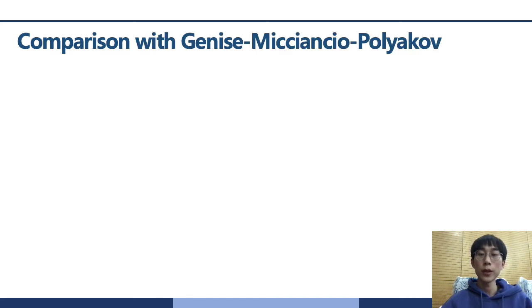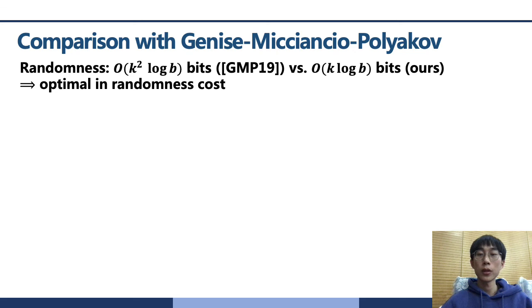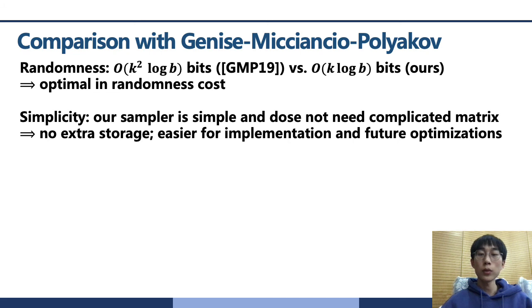Next is a comparison with our sampler and Genise-Micciancio-Polykov. The GMP algorithms use the k squared log B random bits, which was claimed to be almost optimal in their paper. In fact, our algorithms only need k log B random bits. Notably, our algorithm for arbitrary modulus needs an asymptotically same amount of randomness with the one for power B modulus. We therefore believe that it is essentially optimal in randomness requirement. And our sampler is simple and doesn't need complicated matrix. So we didn't need extra storage and it's easier for implementation and further optimization.